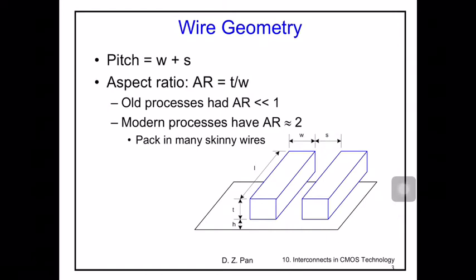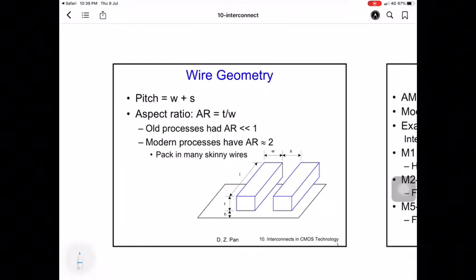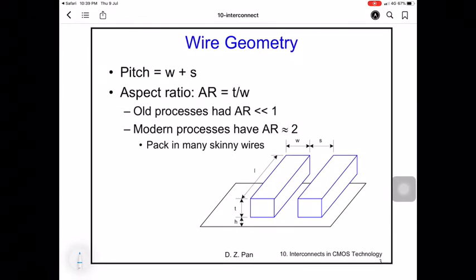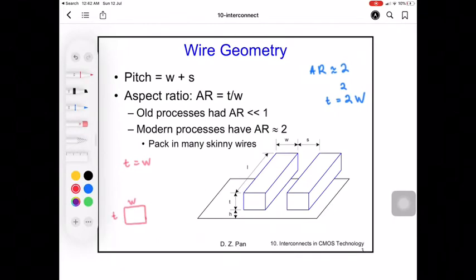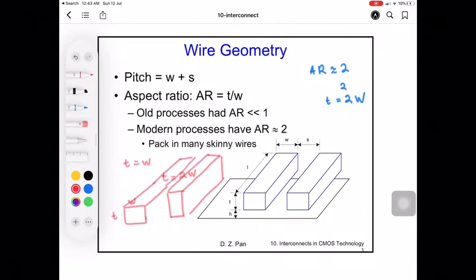Let's look at the wire geometry. Wire dimensions are defined by their aspect ratio, T over W. For old processes the aspect ratio is less than one, and for modern processes AR is approximately two, meaning the thickness is double the width. If T equals W, the cross section is short and fat. However if T equals 2W, the cross section is very skinny and tall.